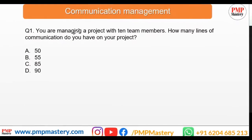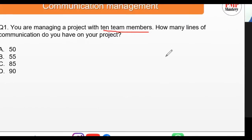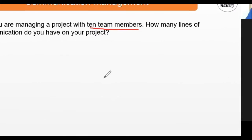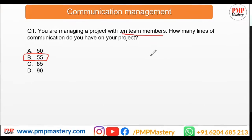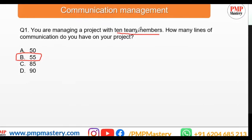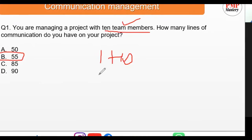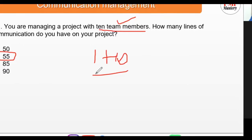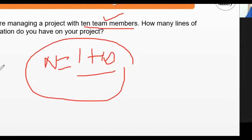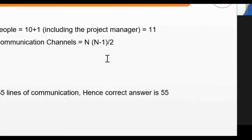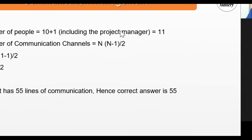Question one: you are managing a project with 10 team members — how many lines of communication do you have? The keyword here is 'team members,' so you include yourself as project manager, giving n equals 11. Applying the formula: 11 × 10 / 2 equals 55. The number of people is 10 plus 1 including the project manager, giving the correct answer of 55.